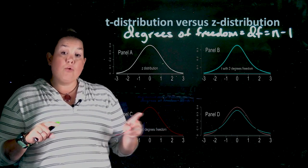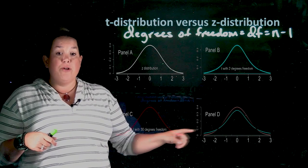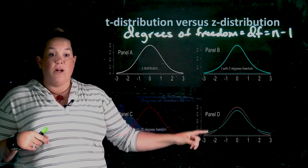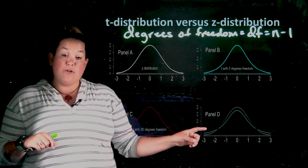When you increase the sample size, or in other words, when you increase degrees of freedom, you'll notice that panel C, which is layered on top here, is beginning to look more and more like the z-distribution, which is true.